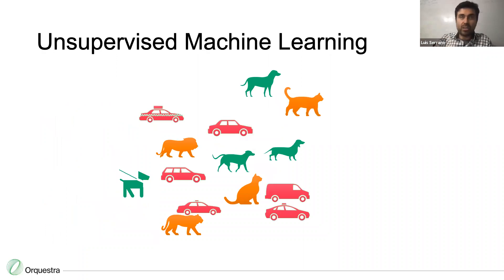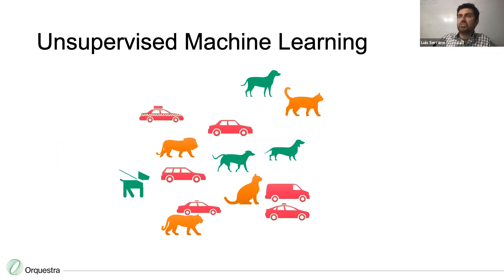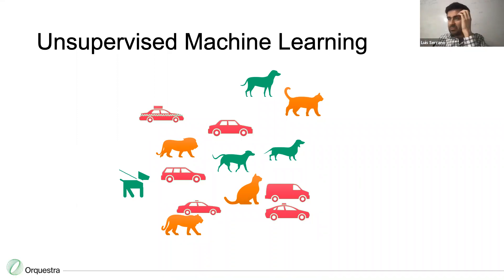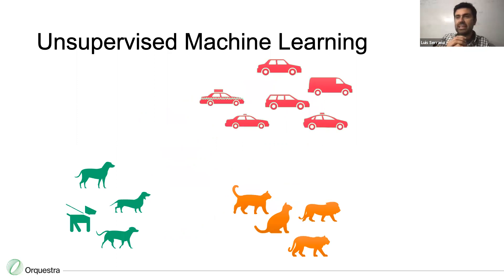In unsupervised machine learning, you don't have labels. You just have a bunch of images and you don't know what they are. The computer can't say 'this is a dog, this is a cat,' but it tries to find as much information as it can from the dataset. An example of unsupervised learning is clustering, where it says 'I don't know what these things are, but they all look alike.'